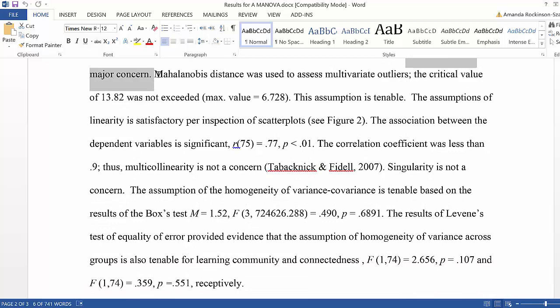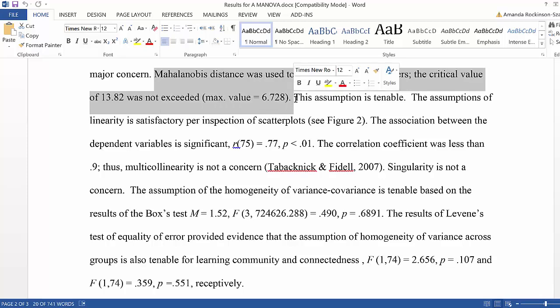Next, I explained that Mahalanobis distance was used to assess multivariate outliers. The critical value of 13.82 was not exceeded because the maximum value was equal to 6.782, so this assumption is tenable.